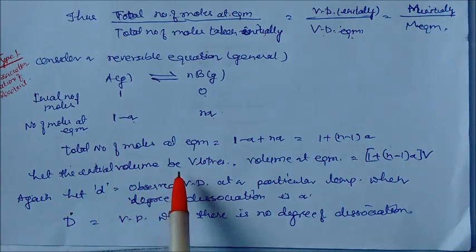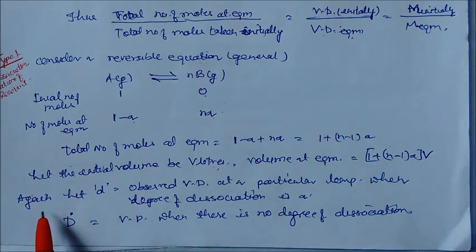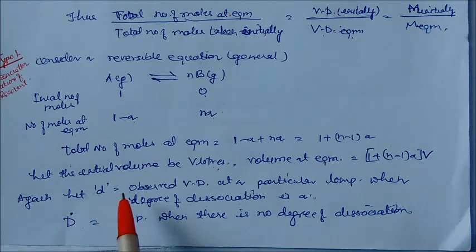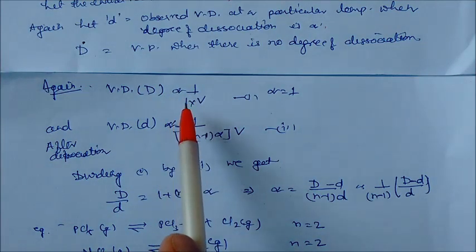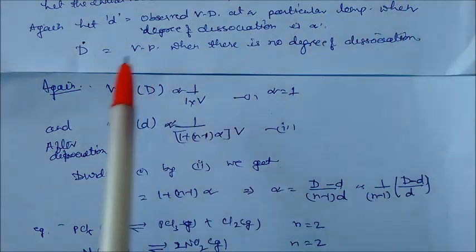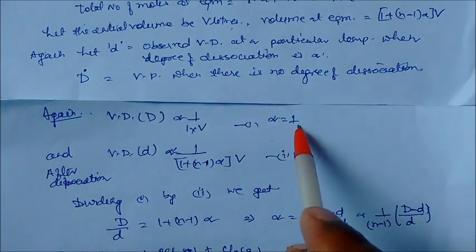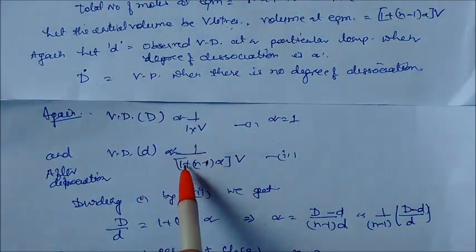Let the initial volume be V liters. D is the observed vapor density at a particular temperature when degree of dissociation is alpha, and capital D is the vapor density when there is no dissociation (alpha = 0). Vapor density is inversely proportional to moles × V. For no dissociation: D ∝ 1/(1·V). At equilibrium: d ∝ 1/((1 + (n-1)·alpha)·V).